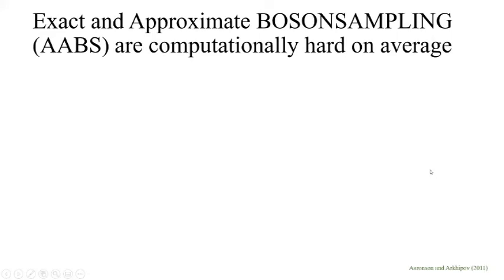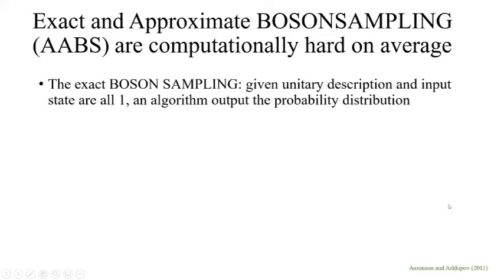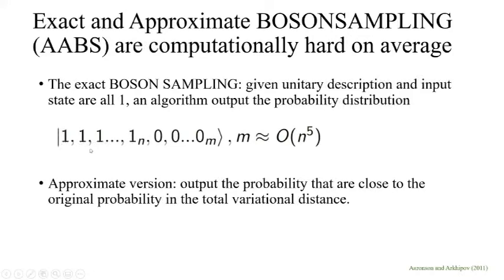The result is that exact and approximate boson sampling, which we call ABS, are computationally hard on average. In the precise version, suppose our input state is one, one, one up to n, and the rest are zeros. If m is order n to the fifth power, then this can be proven to be a very hard question based on some computational hardness assumptions. The approximate version means output probabilities are close to the original probability in total variation distance.